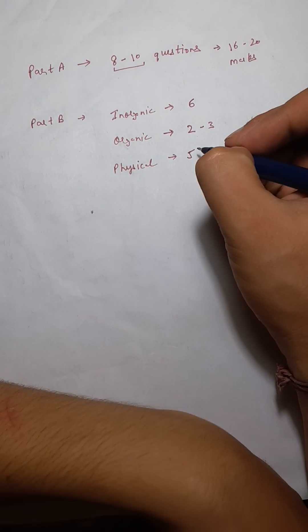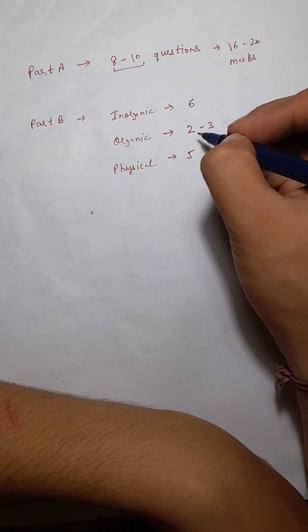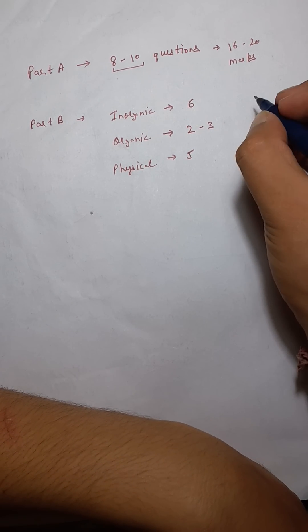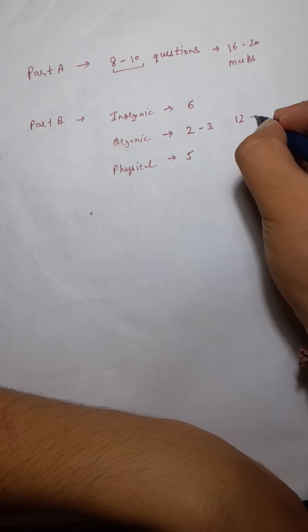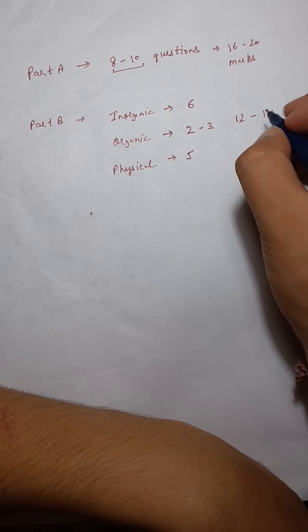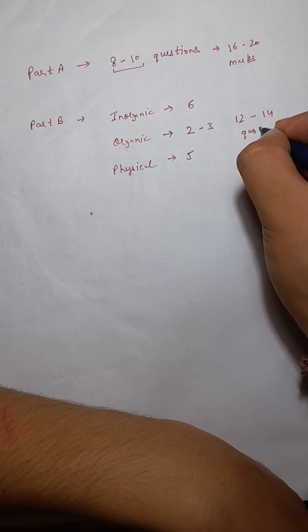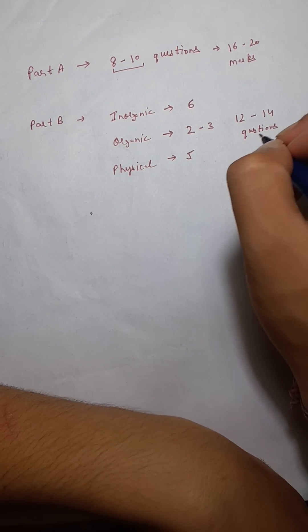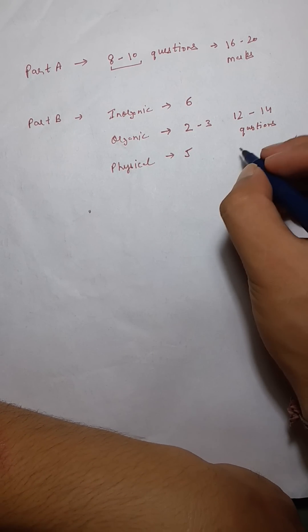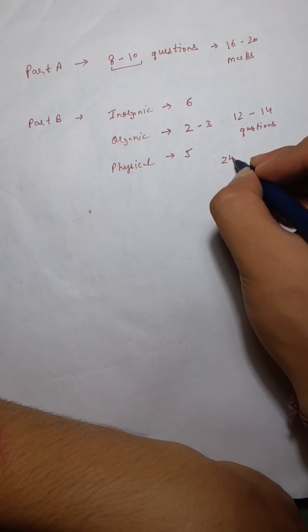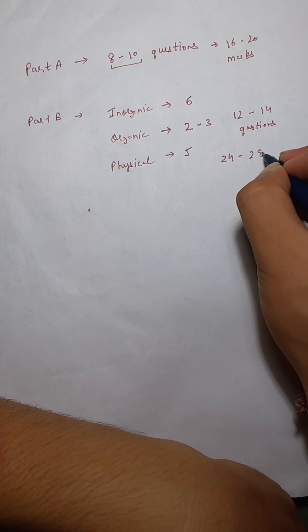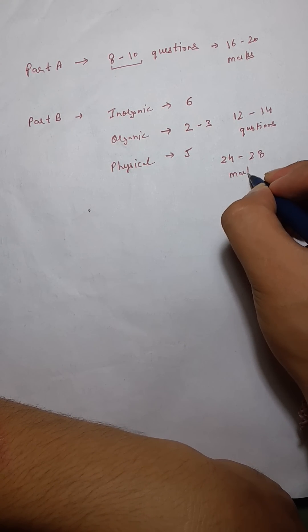So if you calculate the total 6 plus 5, 11 plus 12 to 13 questions. So let's say 12 to 14 questions because we are also taking the silly mistakes. So anywhere between 24 to 28 marks from part B.